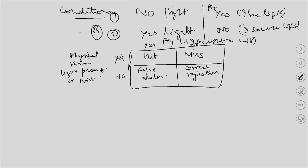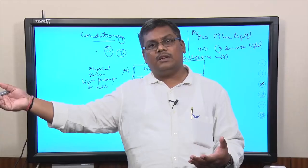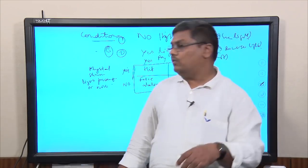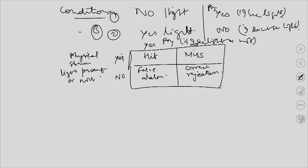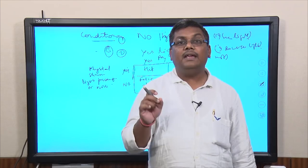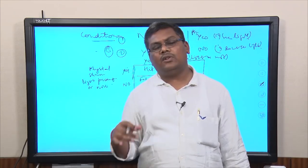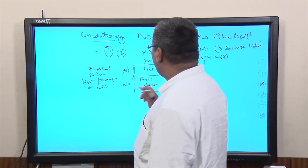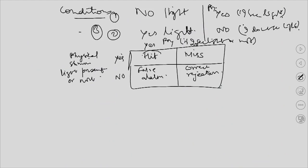These four parameters — hit, miss, false alarm, and correct rejection — are the easiest explanation of signal detection theory. The physical stimulus is constant, but the psychological stimulus — whether you say you see the light or not — is governed by your mental noise. At times you might see the light and at times you might not, because of mental noise. As you increase the hit, the false alarm will also increase. Sensitivity of a system is expressed as D-dash: hit rate minus false alarm rate.